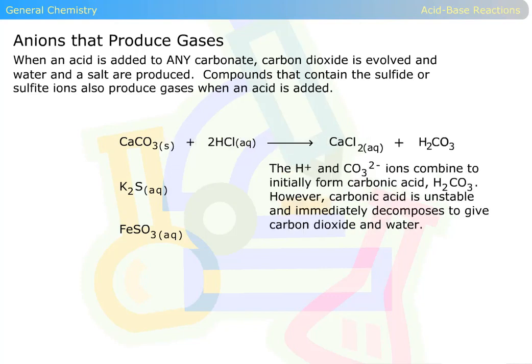The H+ and CO3 2- ions combine to initially form carbonic acid, H2CO3. However, carbonic acid is unstable and immediately decomposes to give carbon dioxide and water. The carbon dioxide is evolved as a gas.